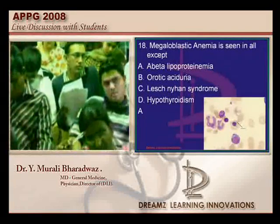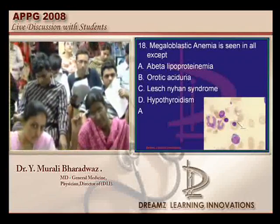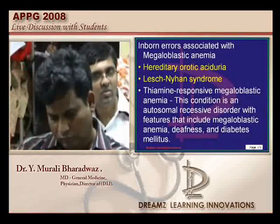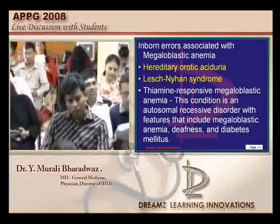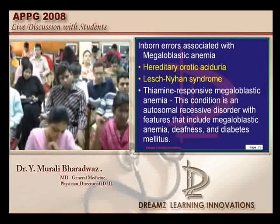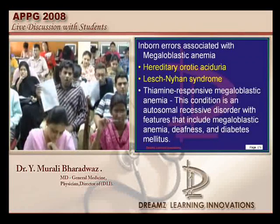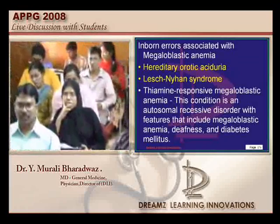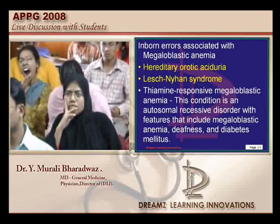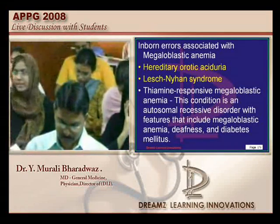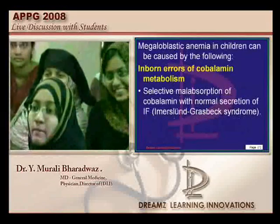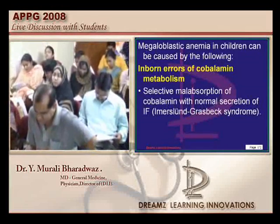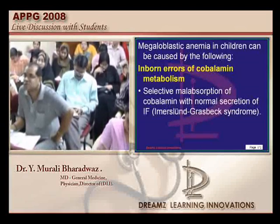Now let us talk about megaloblastic anemia. For any entrance exam, anemia is a definite topic — sideroblastic anemia, anemia of chronic disease, anemia of renal failure. Hereditary orotic aciduria and Lesch-Nyhan syndrome are inborn errors that can lead to megaloblastic anemia. Methylmalonic aciduria and homocystinuria, where vitamin B12 deficiency and folate metabolism are affected, can also cause it. Megaloblastic anemia can also be associated with autoimmune hypothyroidism and pernicious anemia.